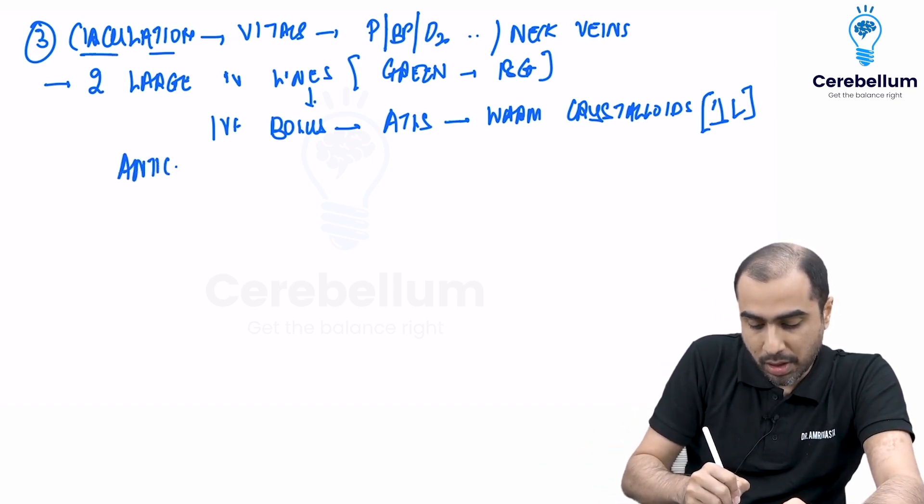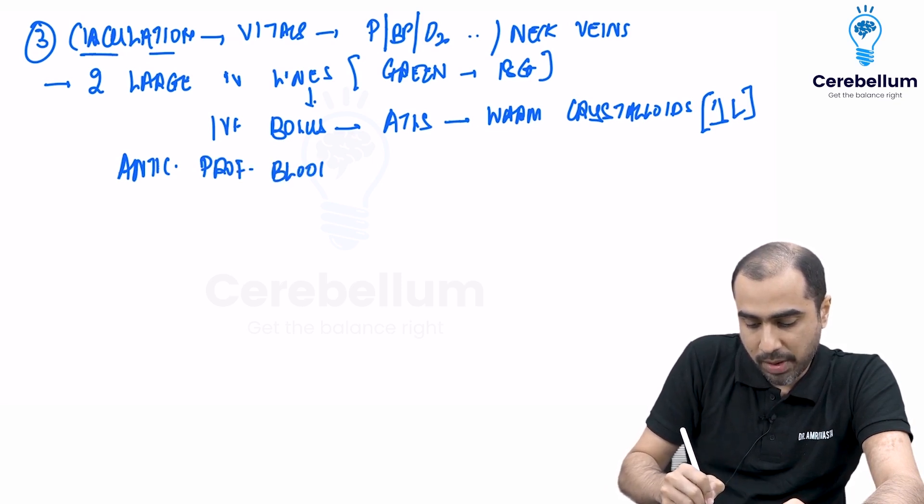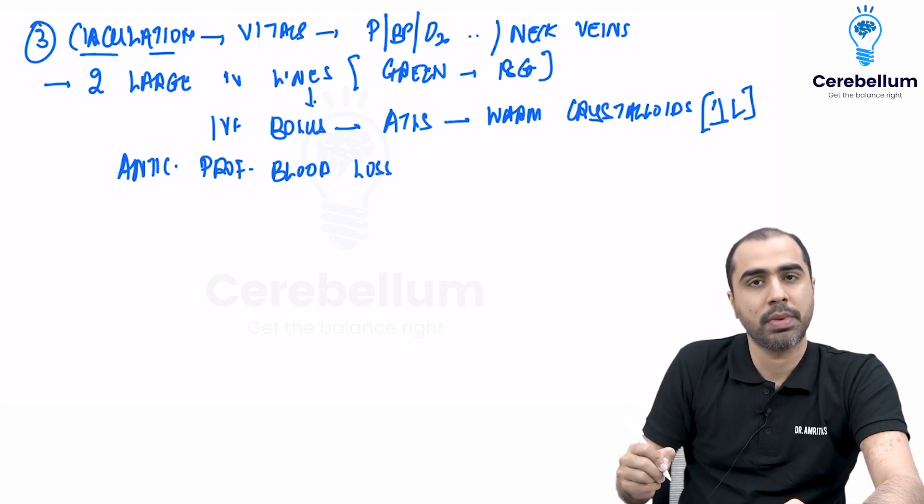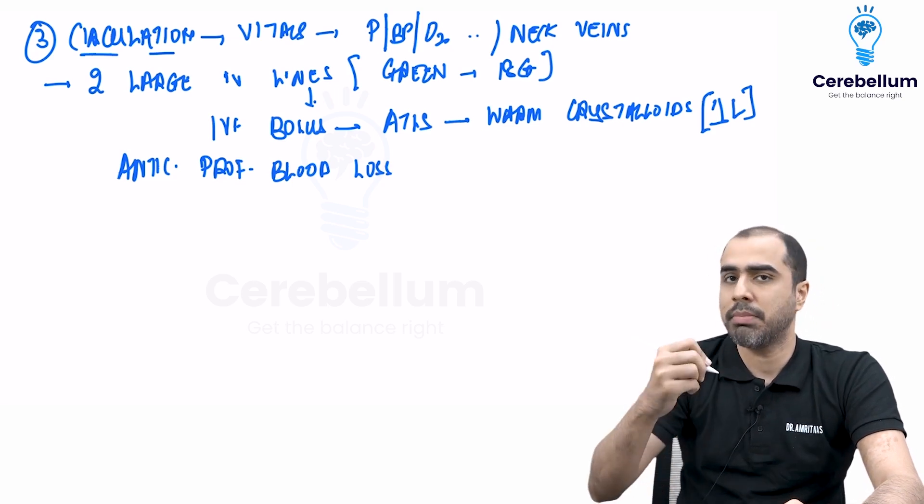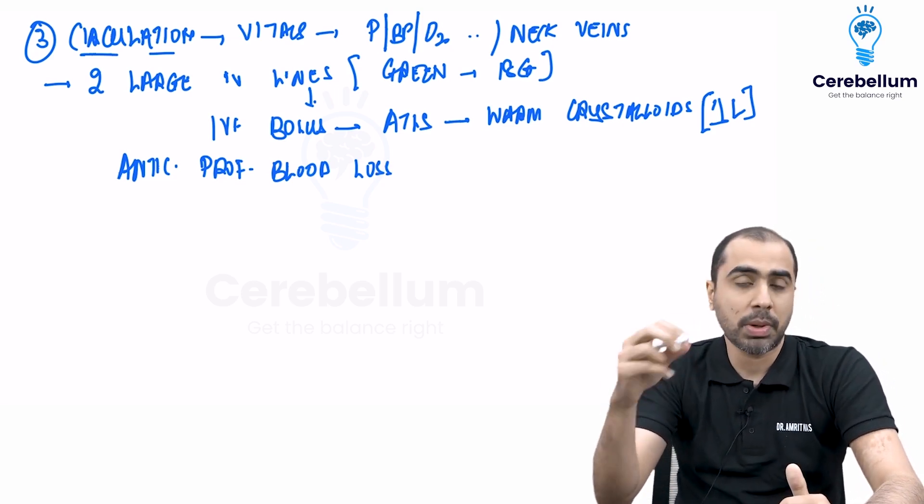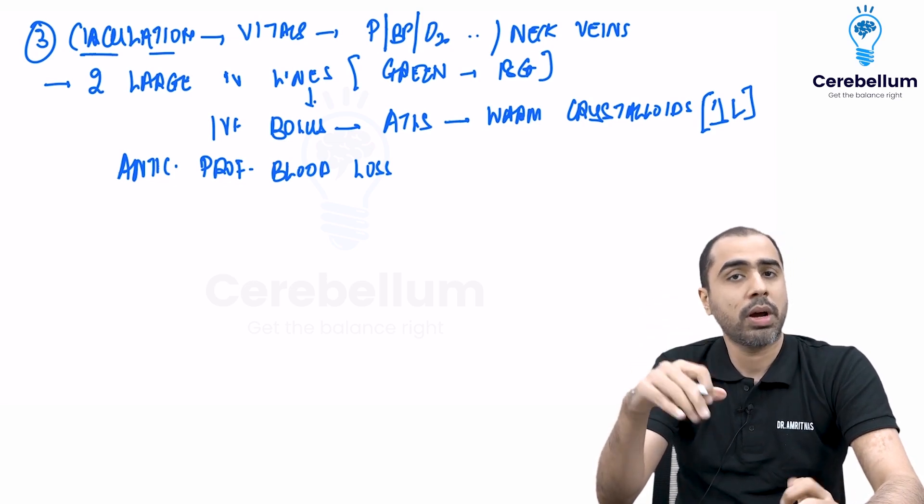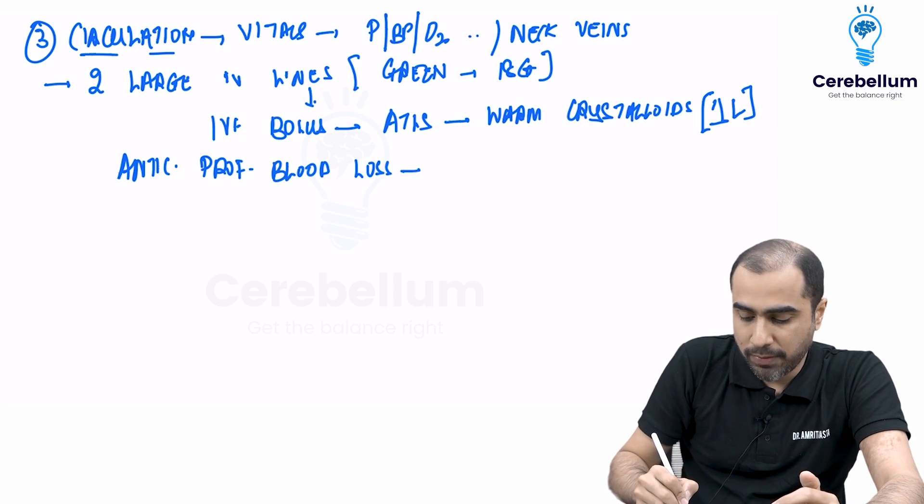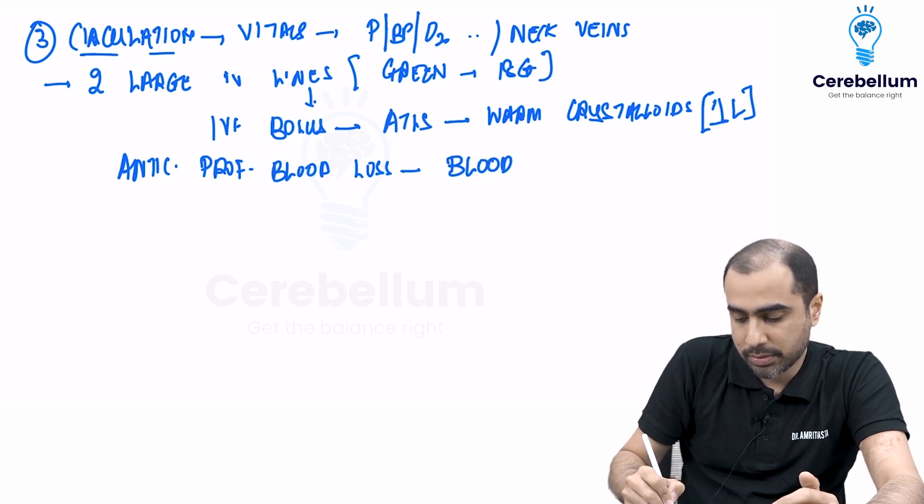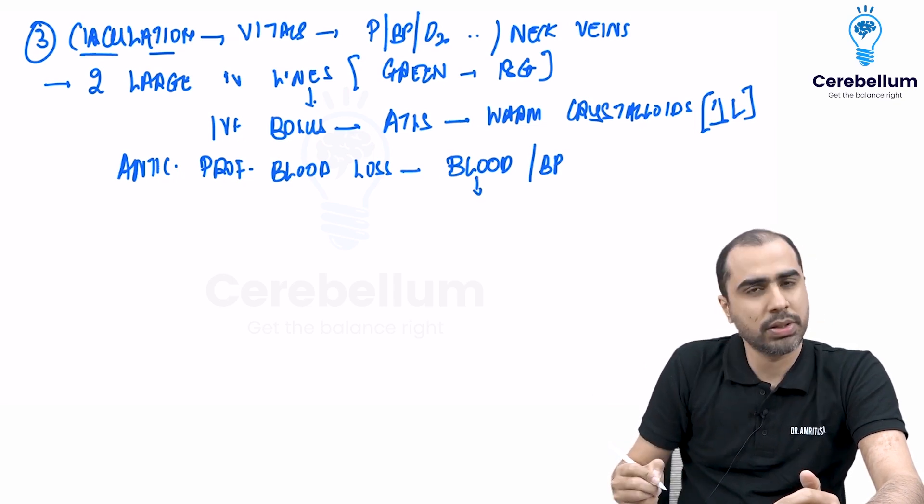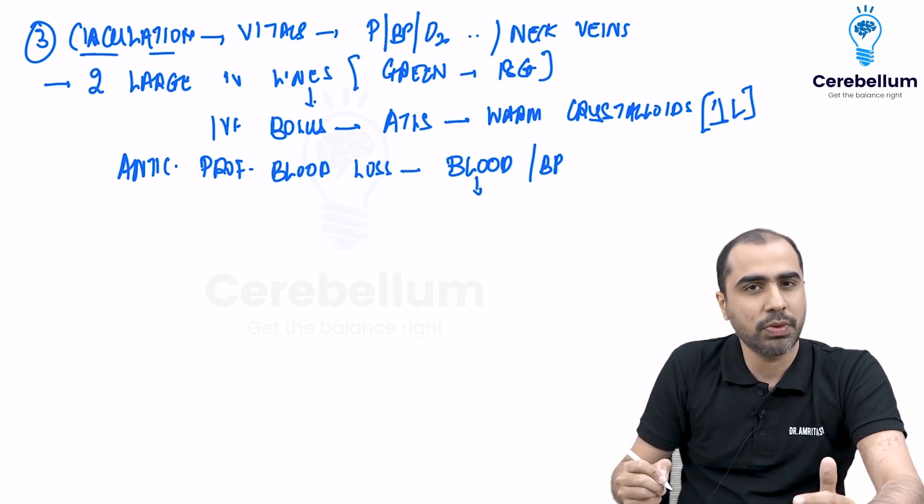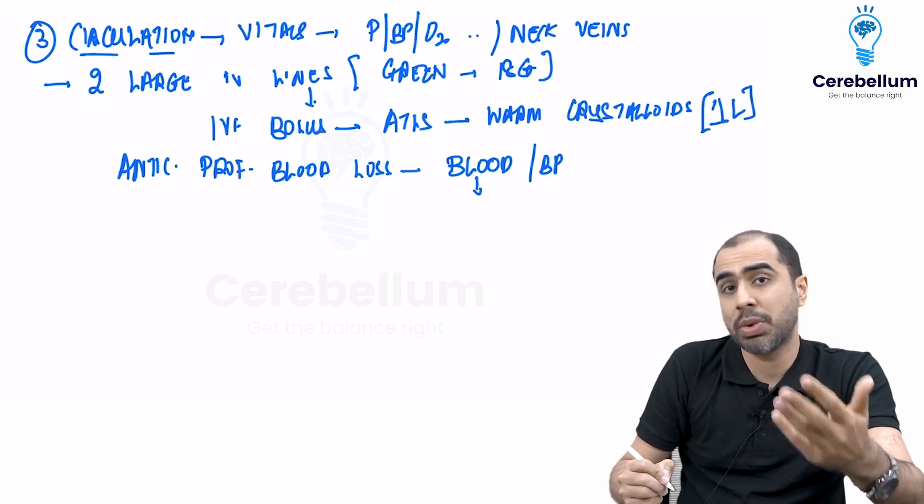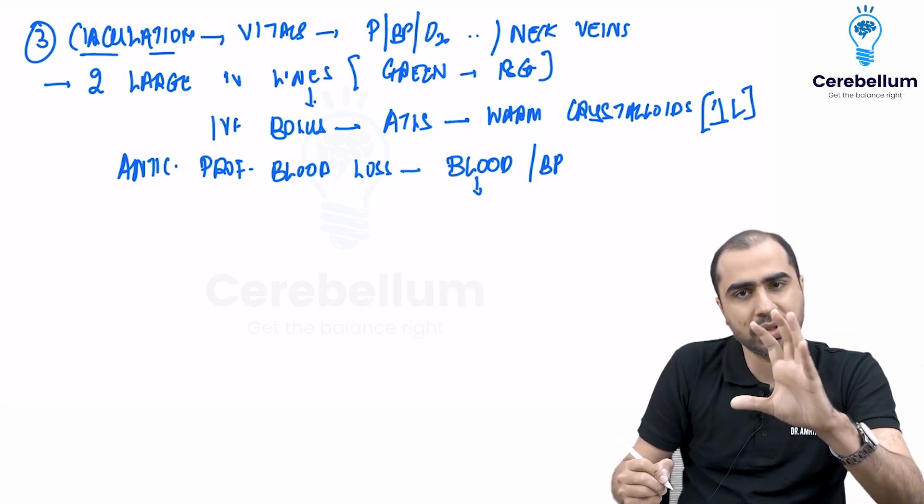If I am anticipating profound blood loss, like the person has had major road traffic accident, his pulse is very high, blood pressure is very low, he may require significant resuscitation. In that case, I would prefer blood and blood products. What I am going to use is also called massive transfusion protocol, which applies to bleeding and trauma, but it applies to other bleeds, not just trauma.